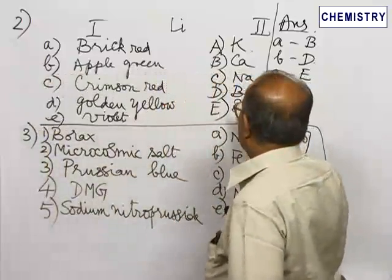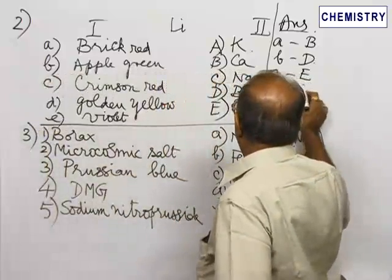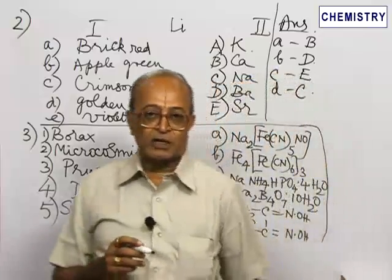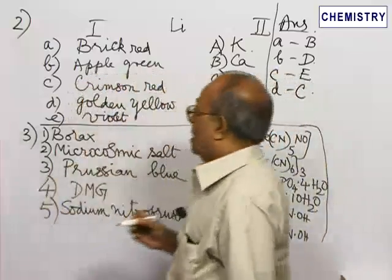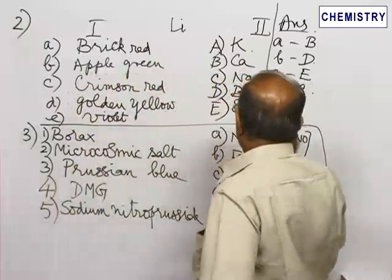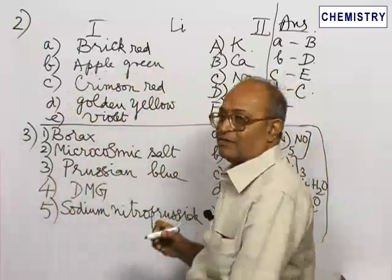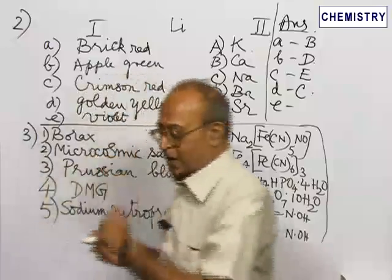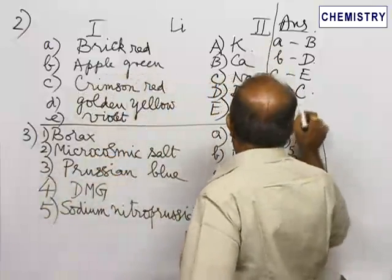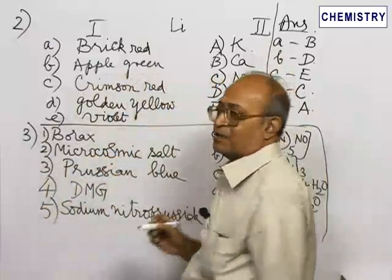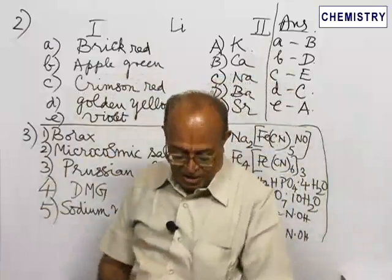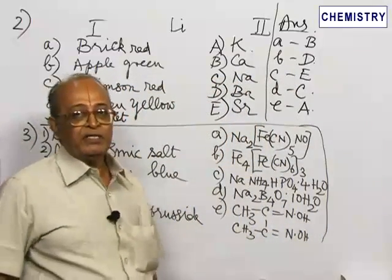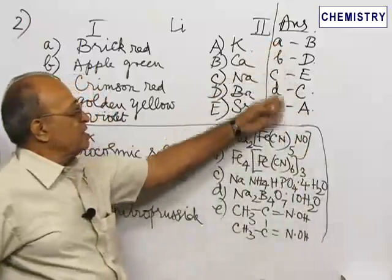Next, golden yellow flame coloration: sodium salts will give this golden yellow flame coloration. Last one, E — violet flame color: violet coloration is given by potassium salts.